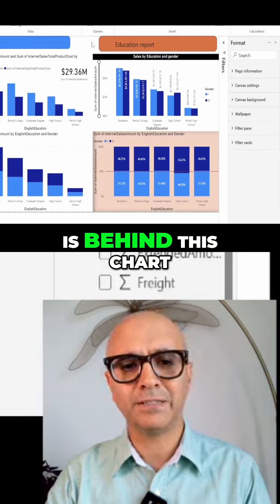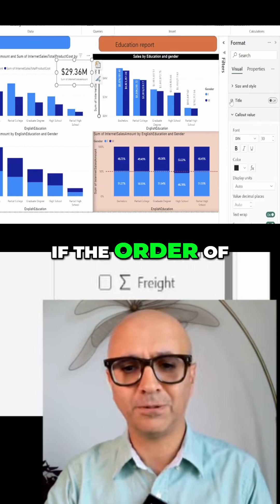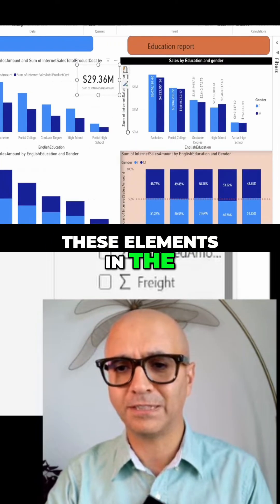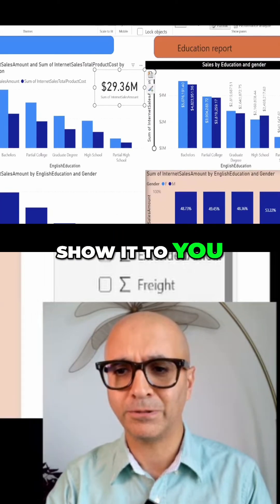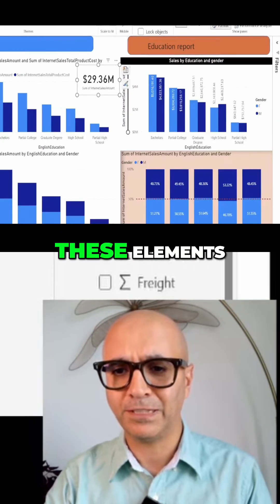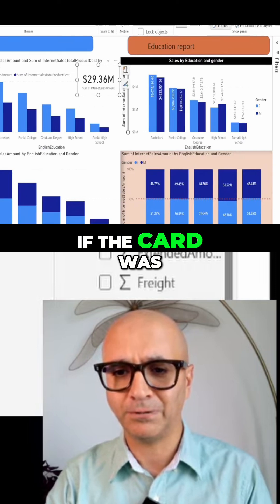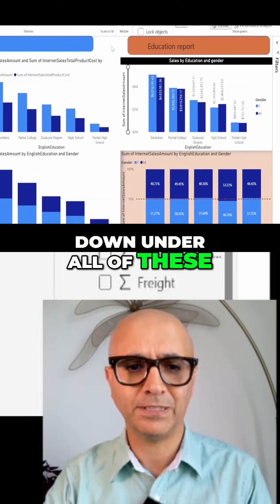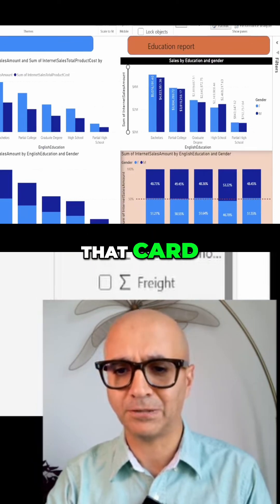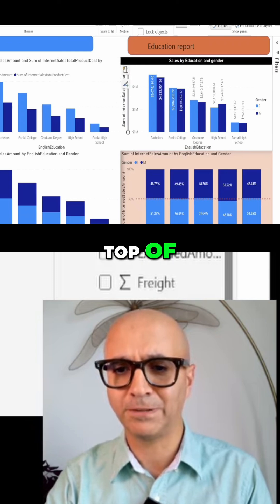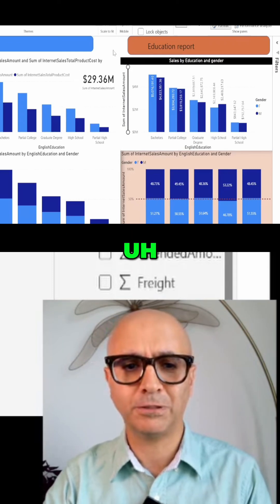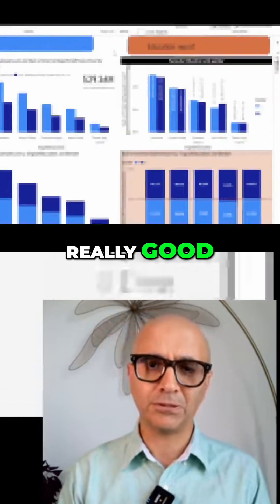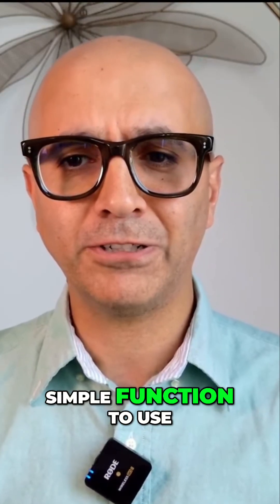is behind this chart. The order of these elements in the selection pane matters, and I'll go to the selection pane again to show you. If the card was down under all of these, then you wouldn't see that card. So bringing it on top of at least the chart we're going to show makes the layering work really well. It's a really simple function to